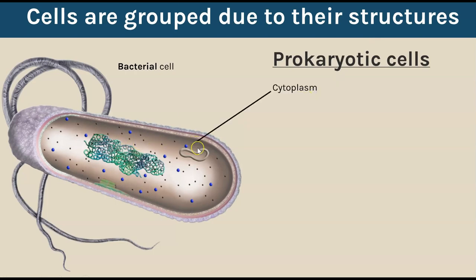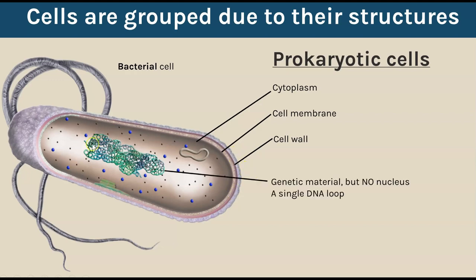Prokaryotic cells are bacterial cells. They do still have cytoplasm, which is the site of most chemical reactions. They have a cell membrane which controls what can enter and exit the cell. They also have a cell wall to provide structural support. Their genetic material is a single loop - it looks complicated because it's a very big loop that's quite tangled up, but the key thing is it's not found inside a nucleus. Some bacteria also have a plasmid, which is a circular loop of DNA - but you don't always find plasmids, so that's only sometimes in bacteria.